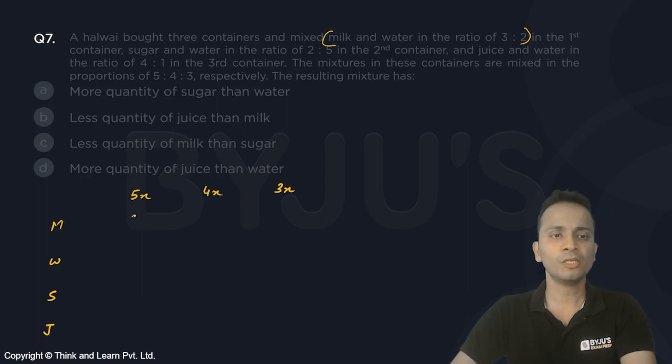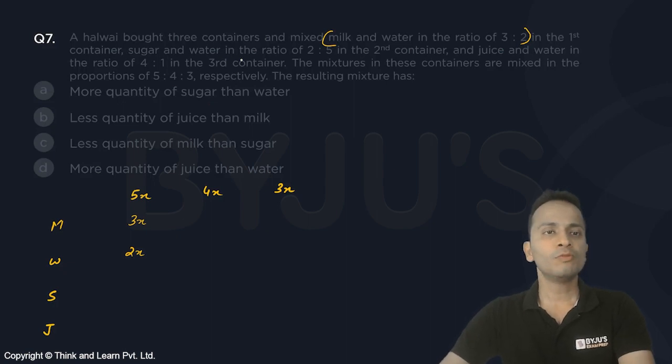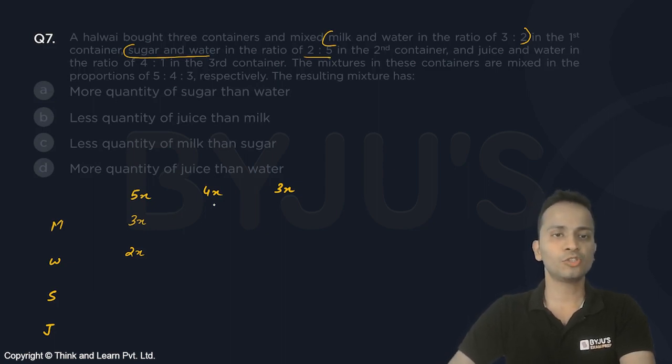Now the second container has sugar and water in the ratio 2 is to 5, so we have to divide 4x in the ratio 2 is to 5. Two parts of sugar, so it will be 2 by 7 multiplied by 4x, that is 8x upon 7. This is the amount of sugar.